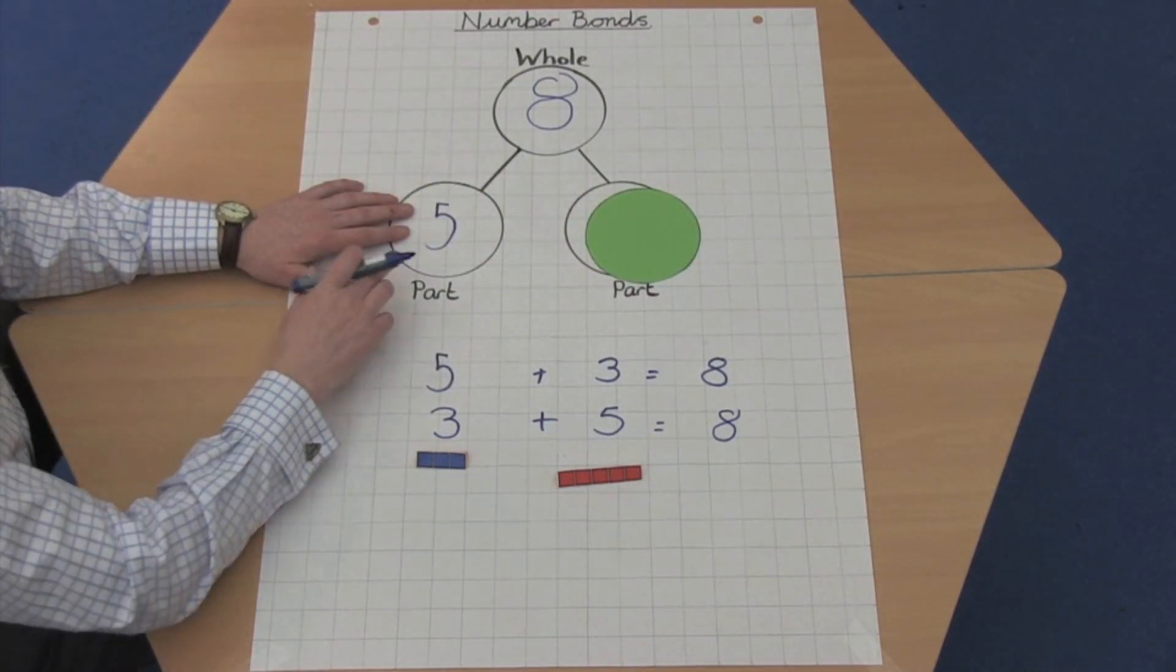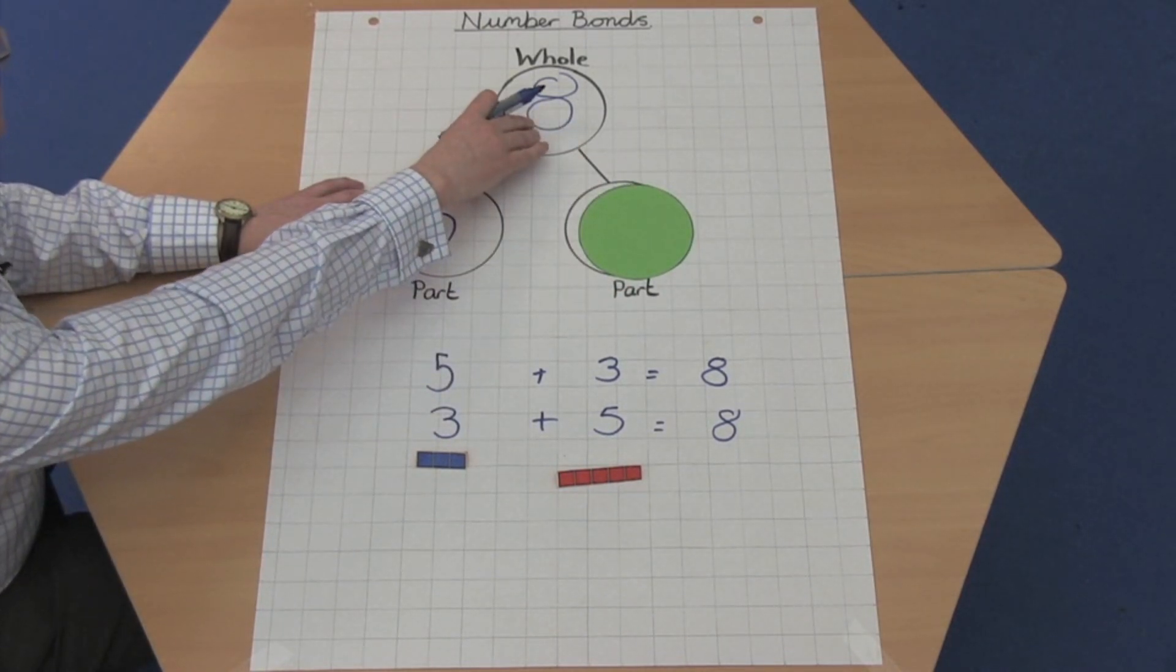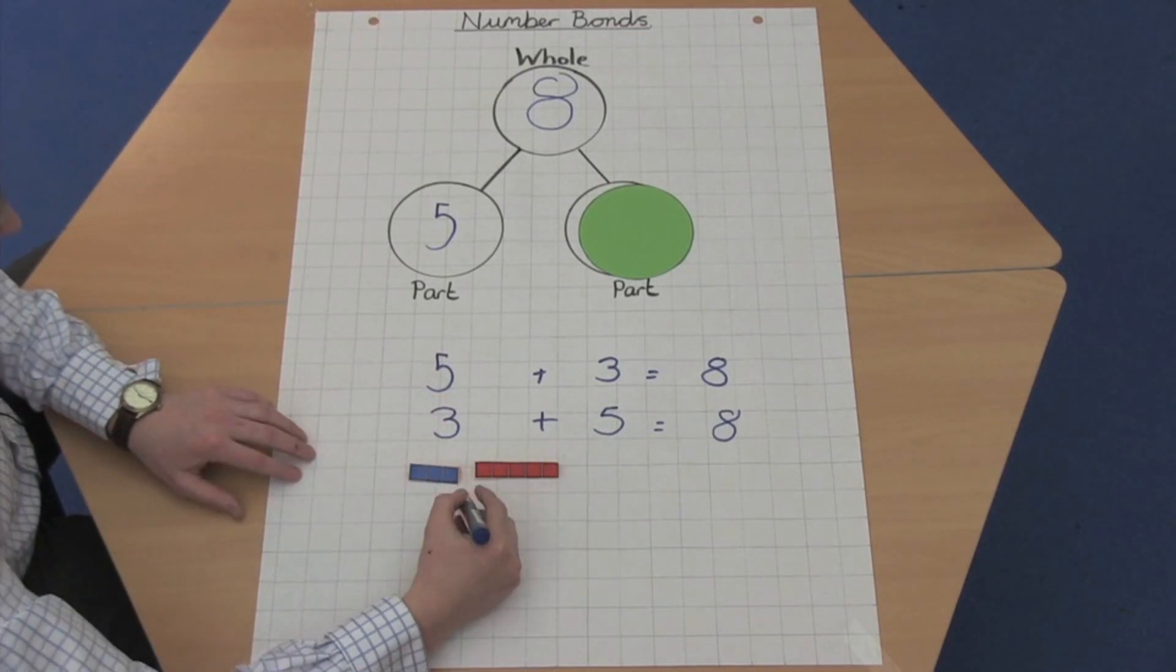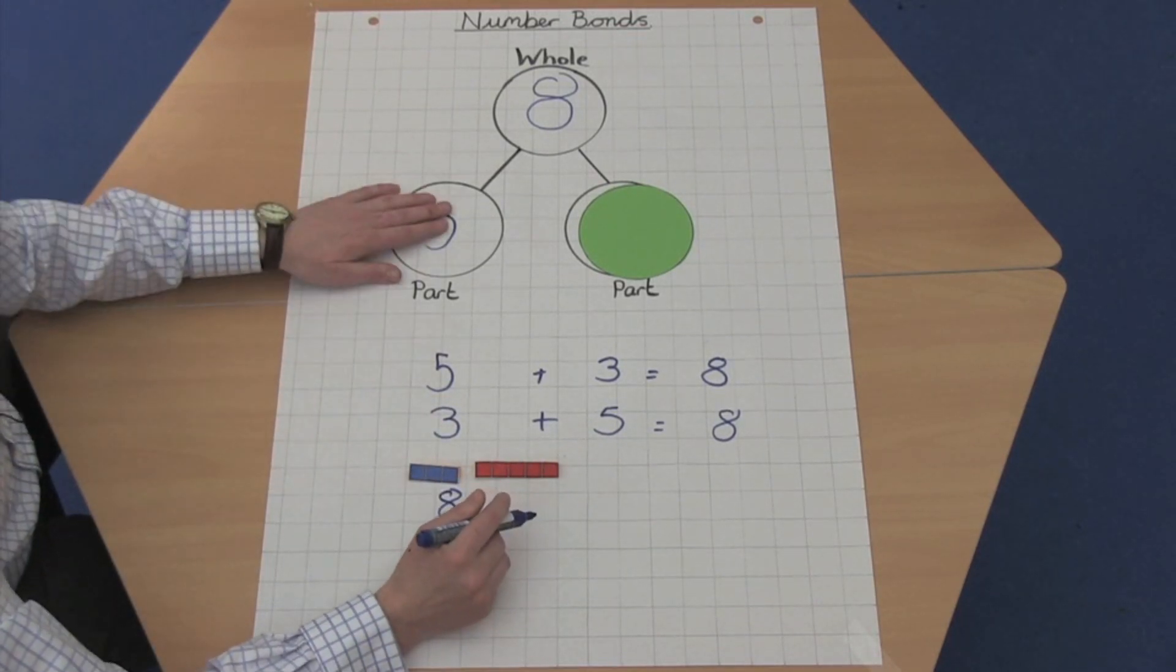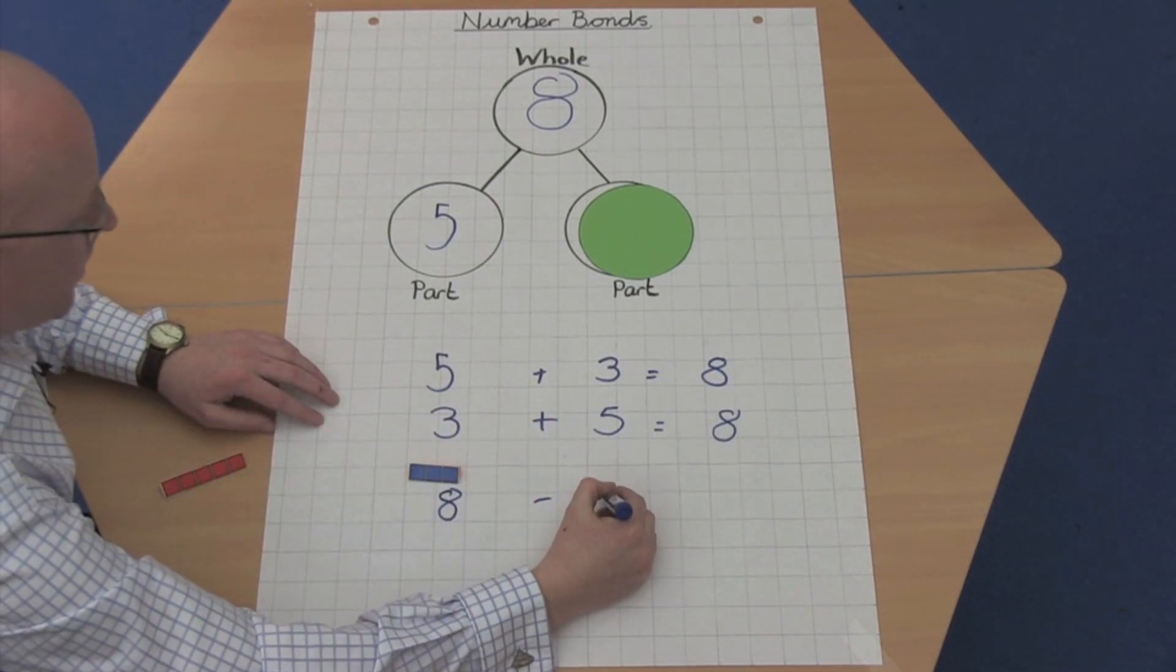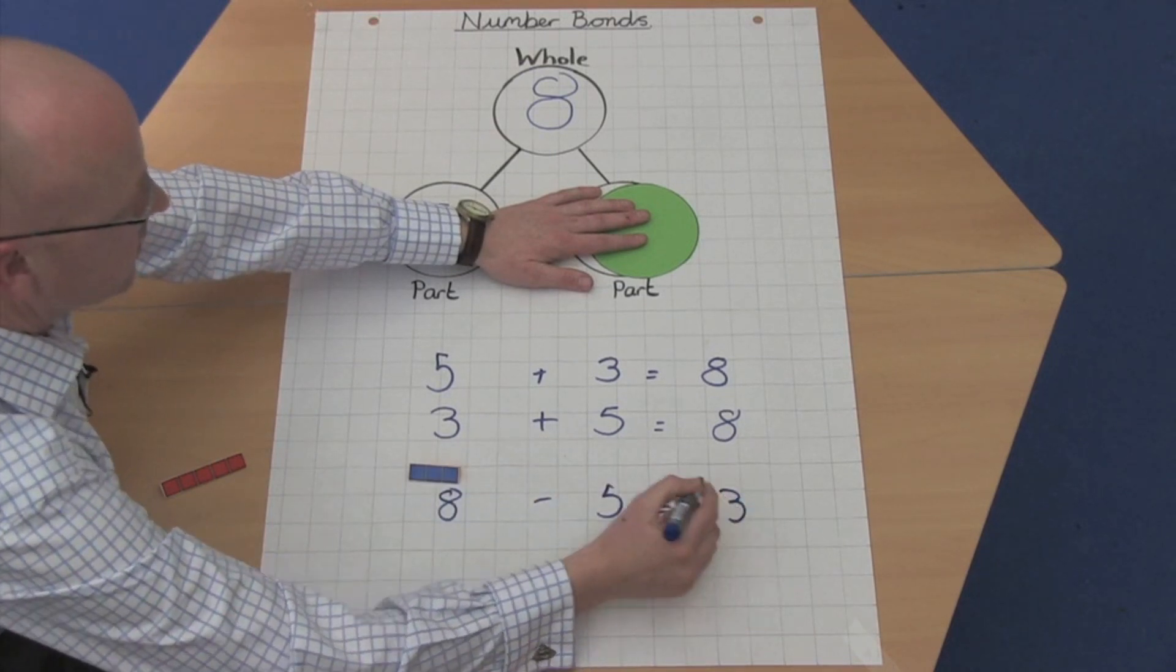This means that five plus something else equals eight. If we take our eight and we take away our five, we are left with the remaining amount, which is three.